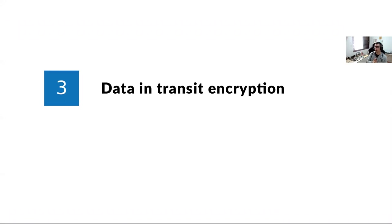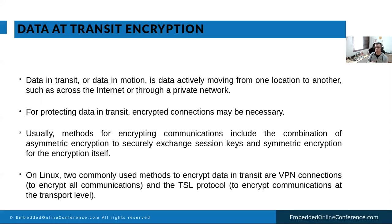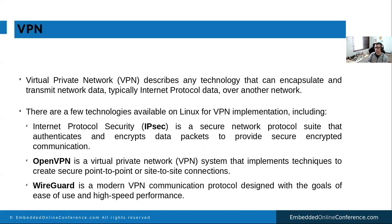We are running low on time, so I'll quickly cover the last section: data in transit encryption. You want to encrypt data sent to or received from a remote machine. There are basically two approaches: VPNs for encrypting the full communication tunnel — IPsec, OpenVPN which uses OpenSSL and TLS, or WireGuard, a more modern kernel-space implementation that's very fast and well-suited for embedded devices.